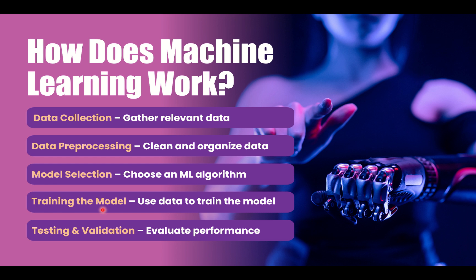Once you train the model, then you have to test and validate the model. Basically, we provide 80% or 70% of the data to train the model and then we use 20% of the data so that we can check the validation of the model.